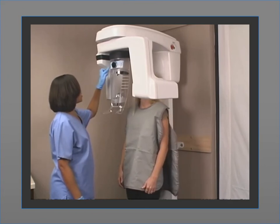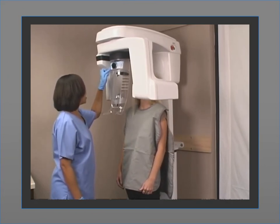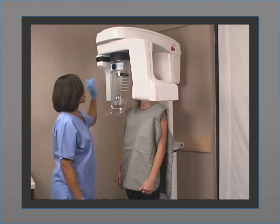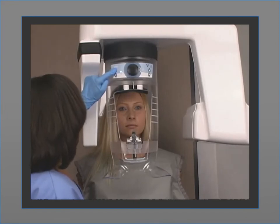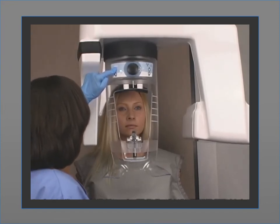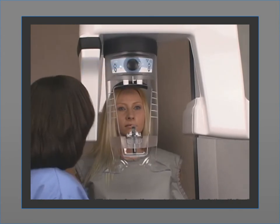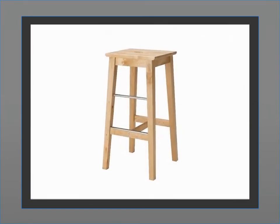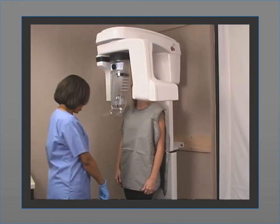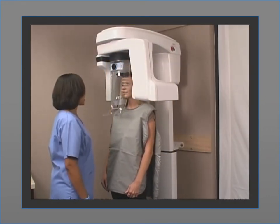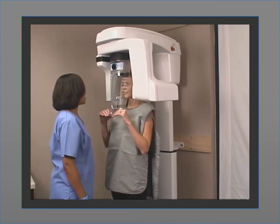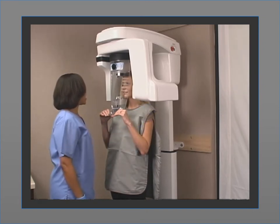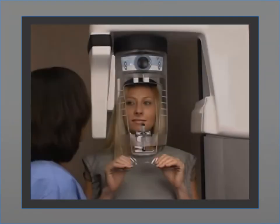Next, adjust the machine to the patient's height. The CS8100 can easily be adjusted for patients standing or sitting, and is wheelchair accessible. Use the height adjustment button on the positioning panel to move the machine to the height of the patient. If the patient is tall, have the patient sit on a stool and then adjust the machine accordingly. After the machine is at the correct height, ask the patient to stand up straight with feet at shoulder width, grip both lower handles of the transparent head and chin rest, position the feet slightly forward, and relax and lower the shoulders.